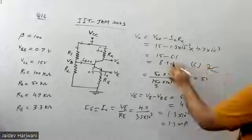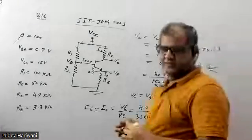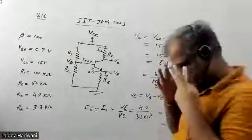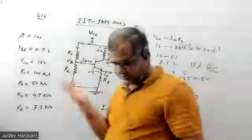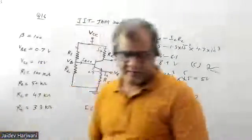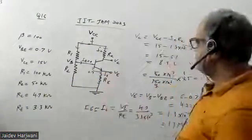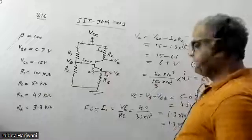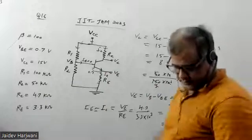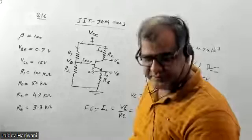So 8.9 volts is the correct answer, which is given as option C. This is a very simple question. We have done so many problems on voltage divider circuits. Hope you liked the solution, thank you very much.